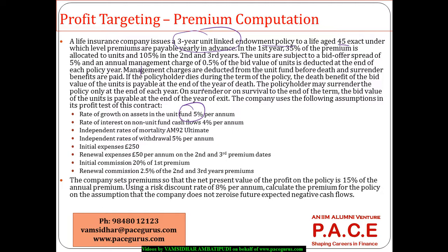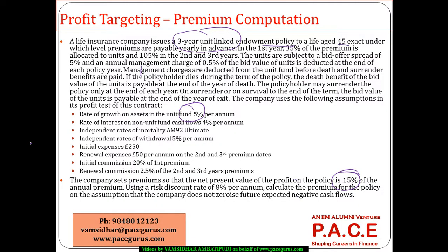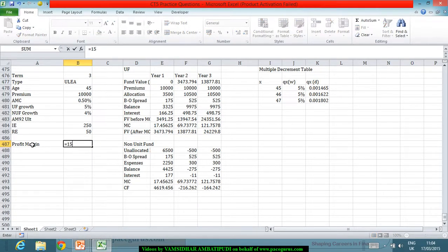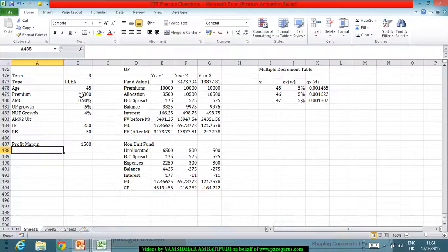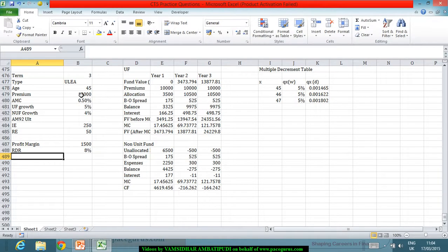The company sets premiums so that the net present value of the policy's profit is 15% of the annual premium — so the target profit margin is 15% of P. A risk-based discount rate of 8% is used to calculate the premium, under the assumption that the company does not zeroise future negative cash flows.